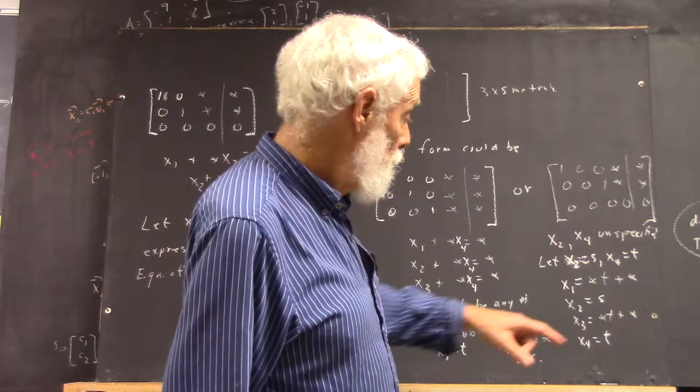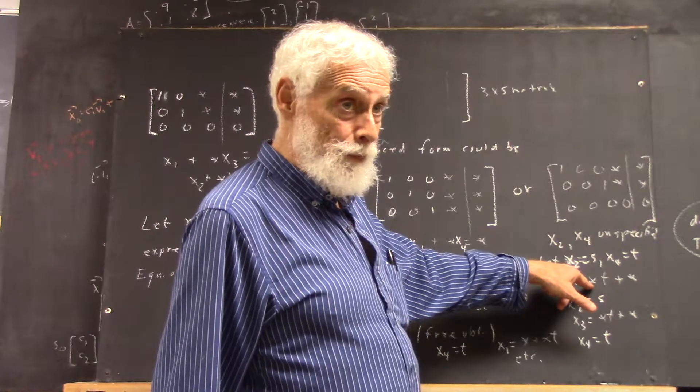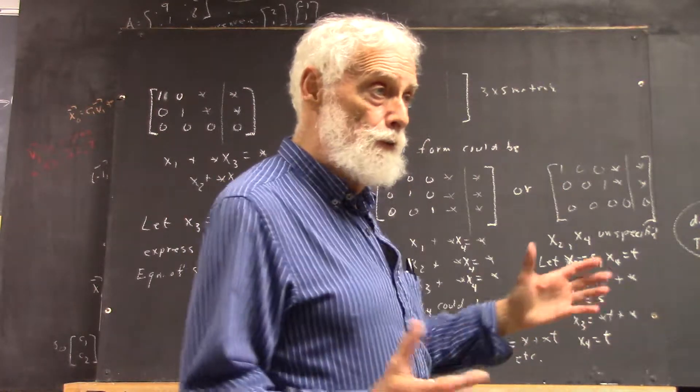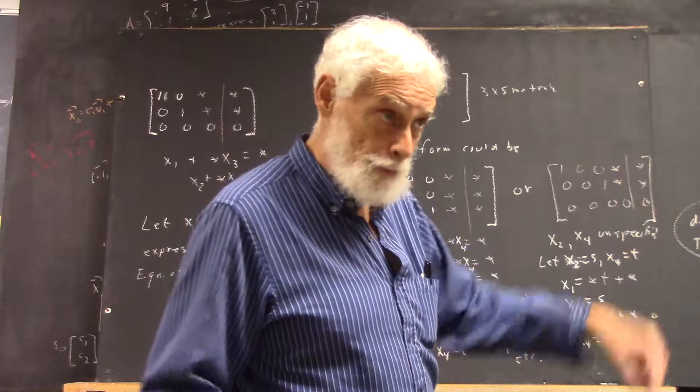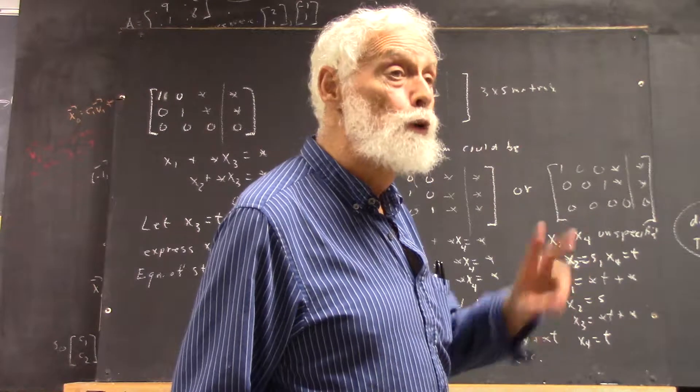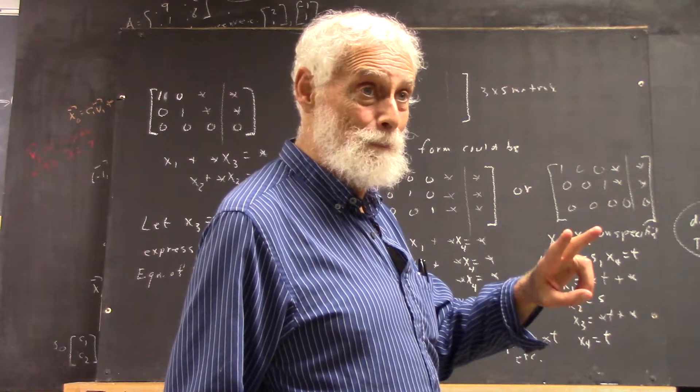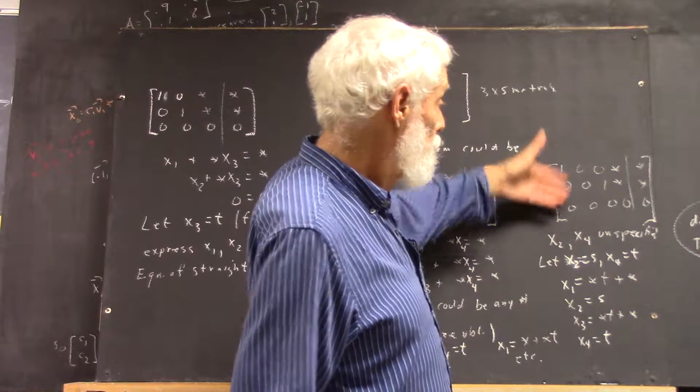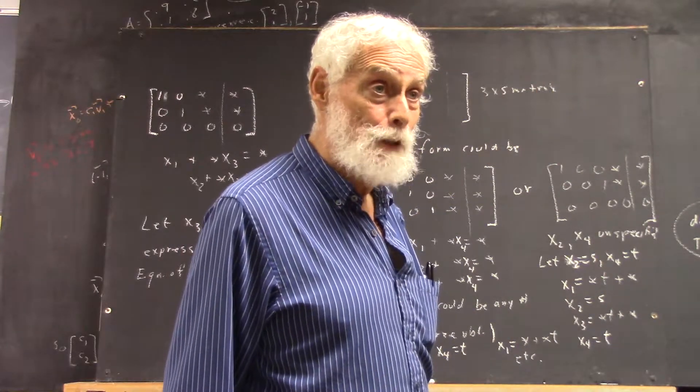And x4 equals t. So, now you have two free variables, right? Now, that's going to ultimately mean that your solution space is two dimensions in a four-dimensional space. So, it's like a plane of two dimensions in a four-dimensional space. In a four-dimensional space, you can also have a plane of three dimensions. You could end up with three free variables, right?